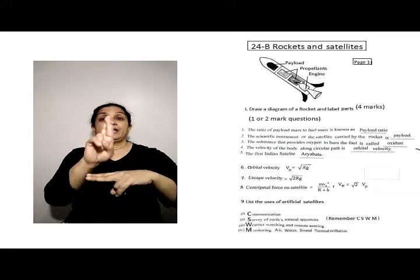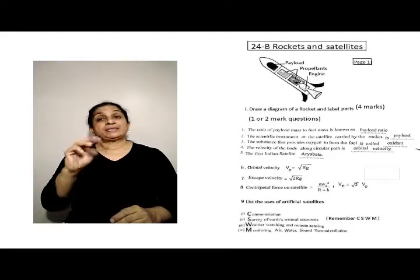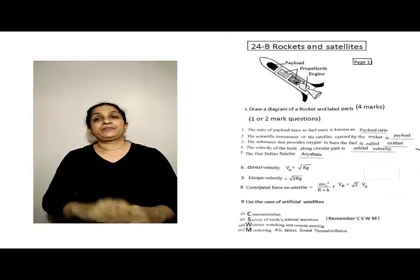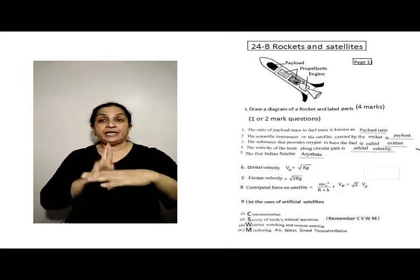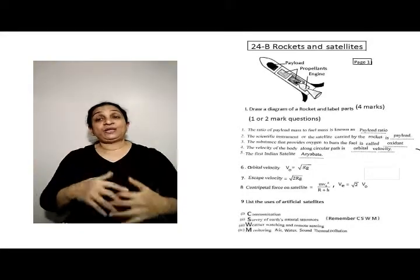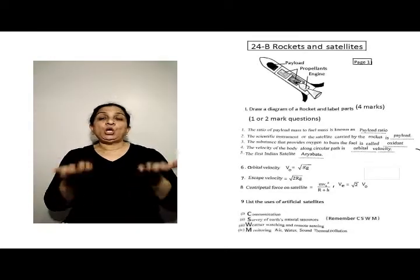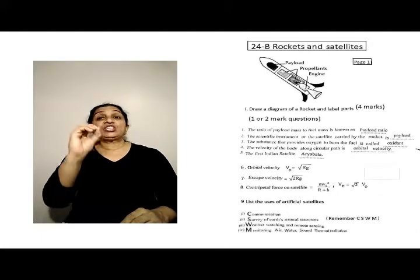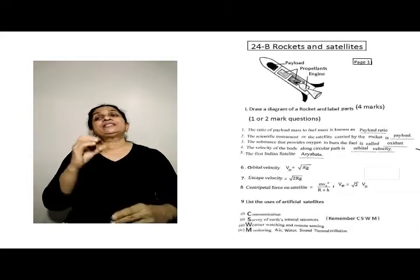First, ratio of payload mass to fuel mass, this is called payload ratio. Second, scientific instrument or the satellite carried by the rocket is called payload. Third, the substance that provides oxygen to burn fuel is called oxidant.